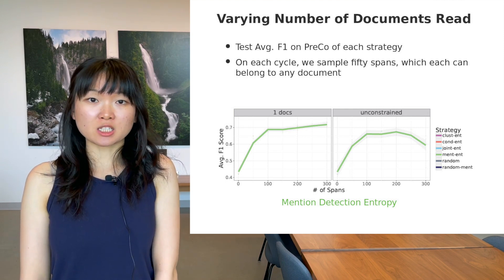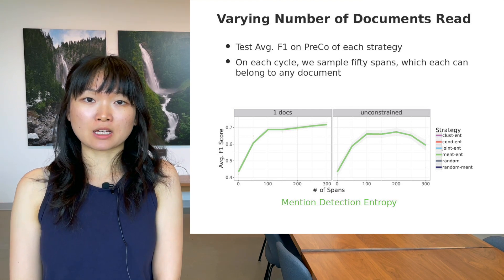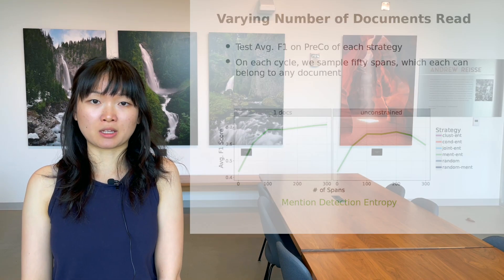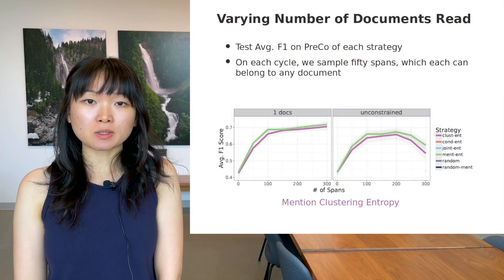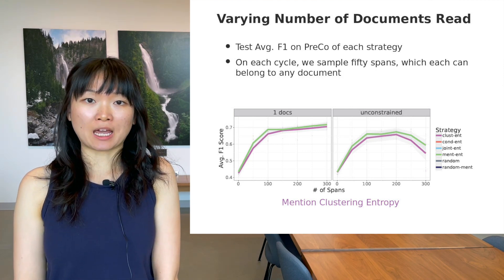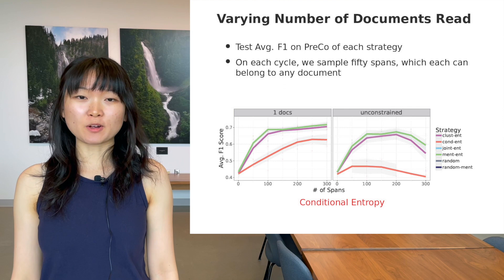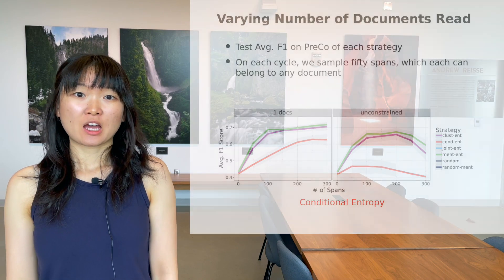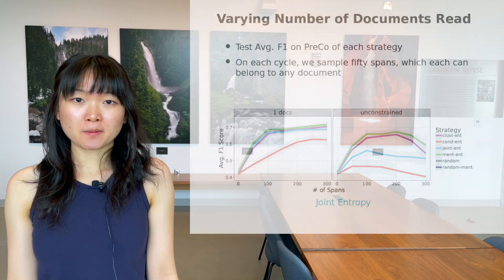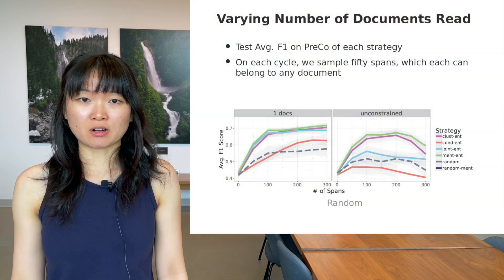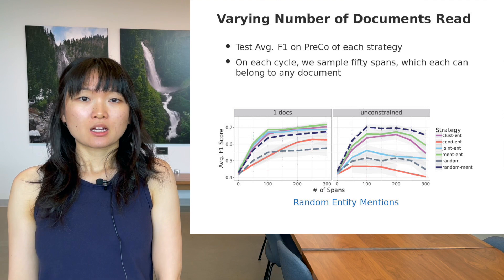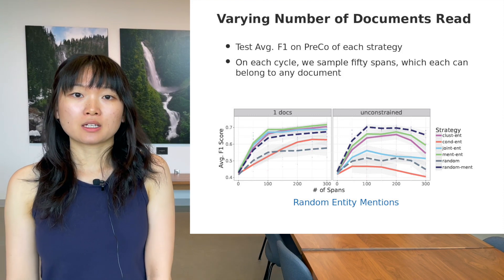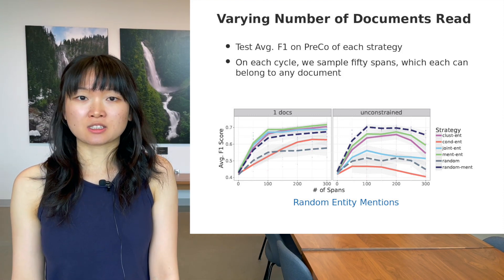For mention detection entropy, we see the F1 score dropping as the cycles increase in the unconstrained sampling simulation. For mention clustering entropy, we see similar degenerative behavior. For conditional entropy, the average F1 score for unconstrained starts to converge towards zero. We see the general behavior for joint entropy as well, and random sampling does even worse. Surprisingly, sampling by random entity mentions does the best for unconstrained, but toward the end of the simulation, accuracy is still dropping off.